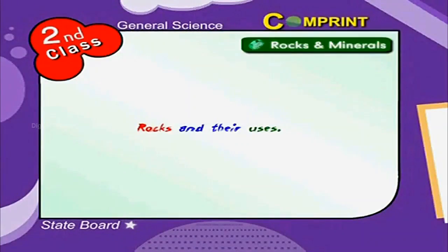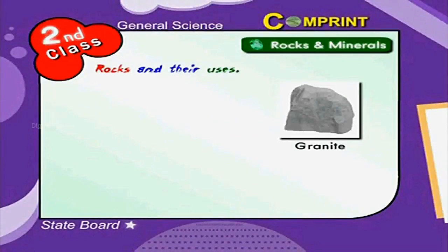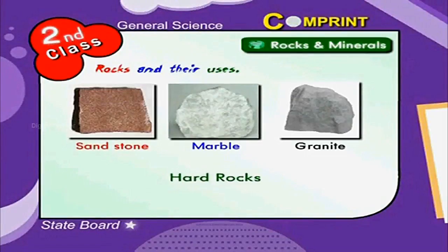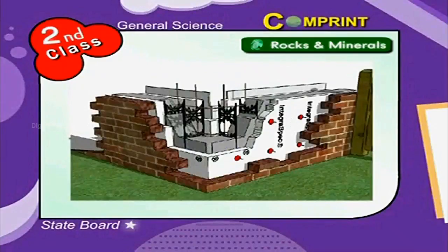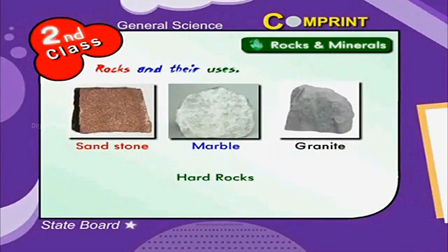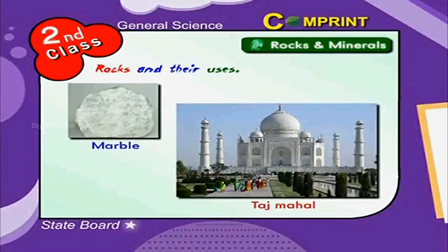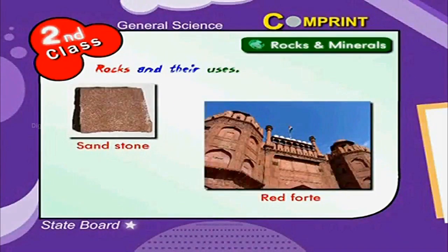Look at the rocks and their uses. Granite, marble and sandstone are hard rocks. They are used in constructing buildings. For example, granite is used as floors after polishing. The Taj Mahal is built of white marble. The Red Fort in Delhi is made of red sandstone.